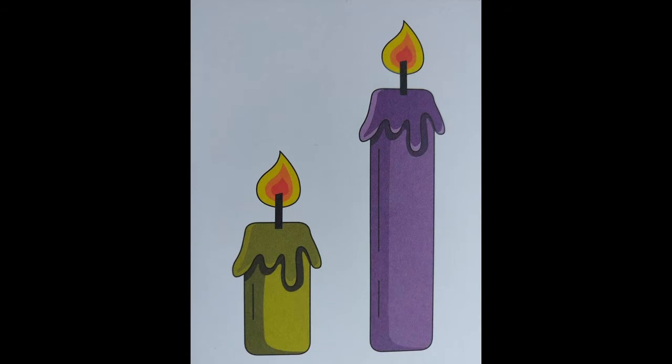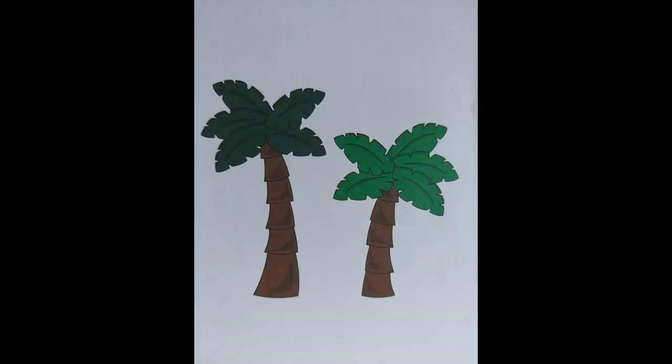Now we'll move to the next example. There are two lovely candles — one is a green candle and one is a purple candle. The green candle is shorter than the purple one. The purple candle is quite tall compared to the green one. You can see the difference, children — the purple candle is tall.